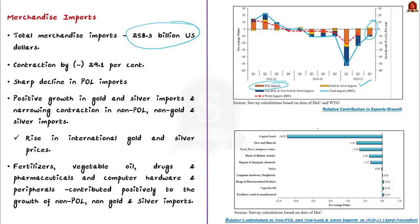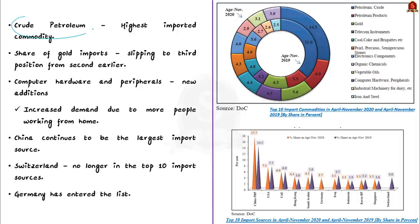Gold and silver imports constitute about 7 to 9% of India's imports. The accelerating positive growth in gold and silver imports was primarily due to the rise in international gold and silver prices. Additionally, fertilizers, vegetable oil, drugs and pharmaceuticals, and computer hardware and peripherals contributed positively to non-POL, non-gold and silver import growth. Crude petroleum continues to be the highest imported commodity in April-November 2020, accounting for a 14.3% share.